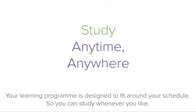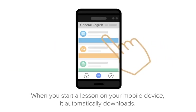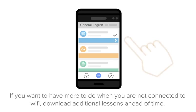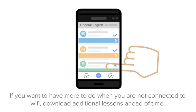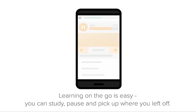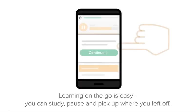Your learning programme is designed to fit around your schedule, so you can study whenever you like. When you start a lesson on your mobile device, it automatically downloads. If you want to have more to do when you are not connected to Wi-Fi, download additional lessons ahead of time. Learning on the go is easy — you can study, pause, and pick up where you left off.